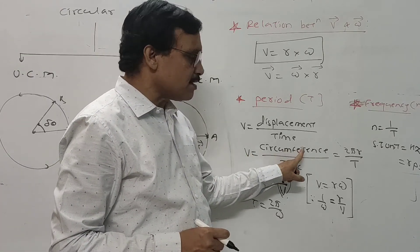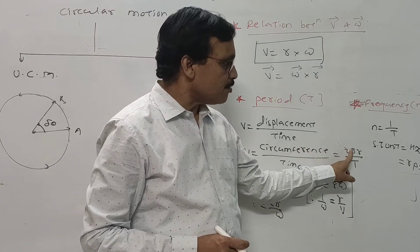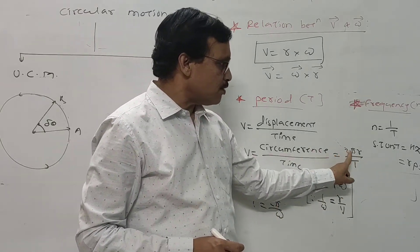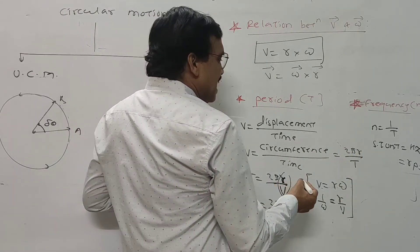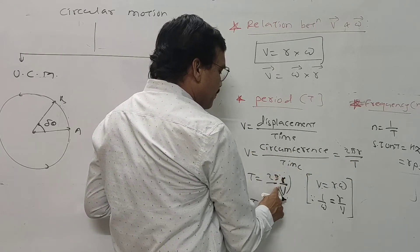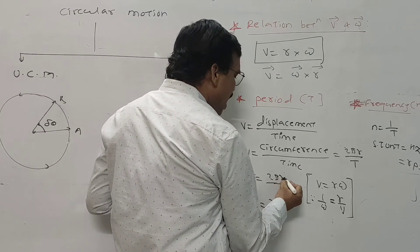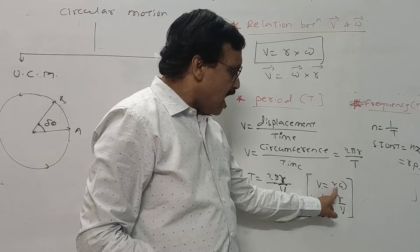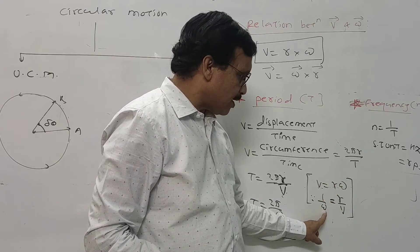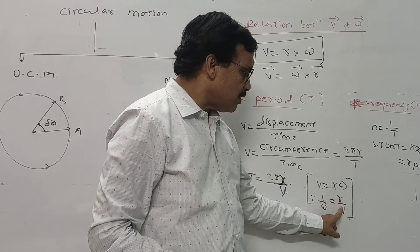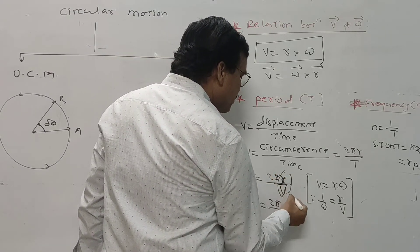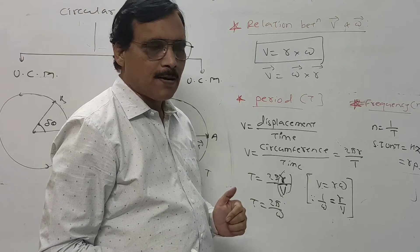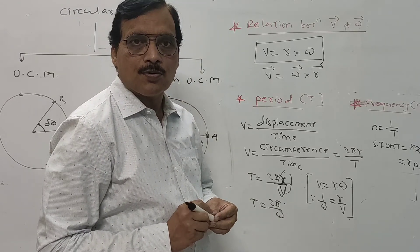To derive the period formula: linear velocity V equals circumference upon time, so V equals 2 pi r upon T. Rearranging, T equals 2 pi r upon v. Since V equals r into omega, r upon v equals 1 upon omega. Therefore, the period T equals 2 pi upon omega.